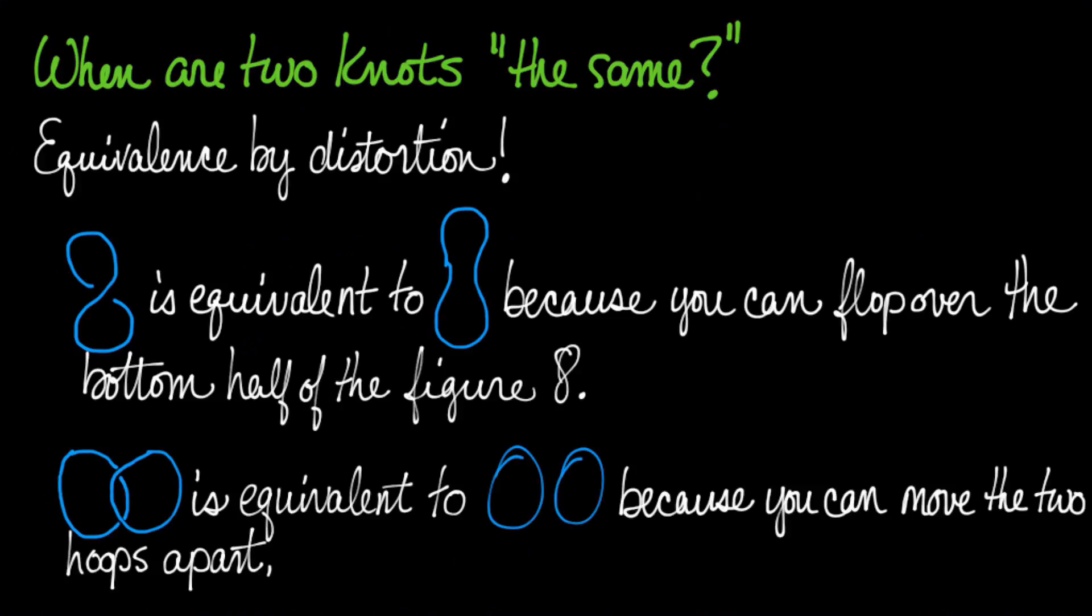And so here are two loops, but can you see how the right-hand loop is on top in both of these crossings? And so this link is equivalent by distortion to this link, because you could just take these two links and pull them apart, and it would create the other picture exactly.